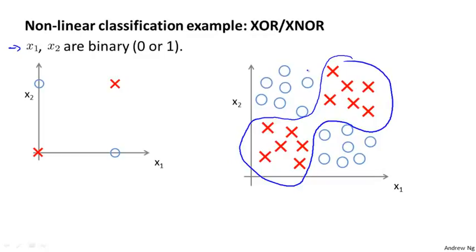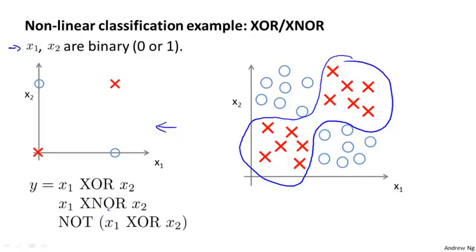So how can a neural network do this? Rather than using an example on the right, I want to use maybe an easier to examine example on the left. Concretely, what this is, is really computing the target label y equals x1 XOR x2. Or actually, this is actually the x1 XNOR x2 function.